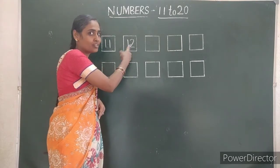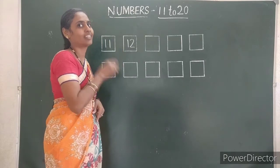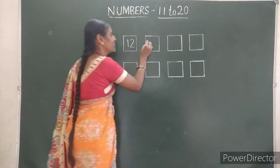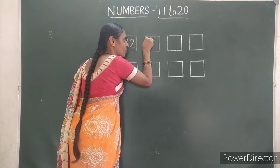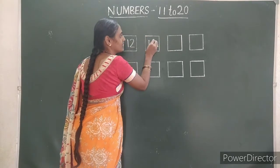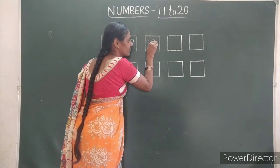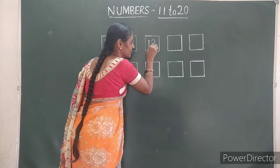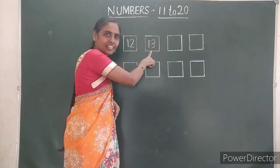After 12, which is the number? 13. First, write 1. Then, 3. 13.